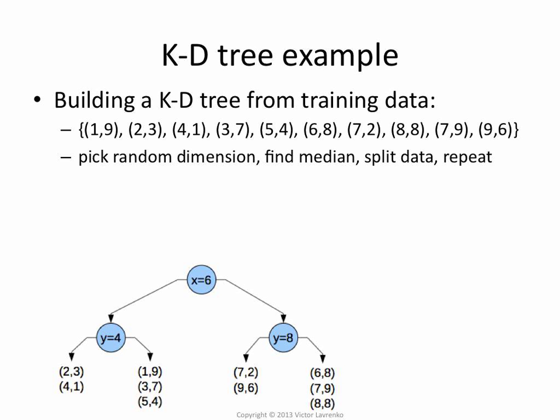So in that case, the median happens to be six for the first attribute, right? So I have one, two, three, four, five attributes smaller, and one, two, three, four, five greater than or equal to six.